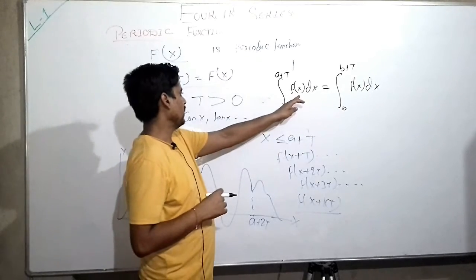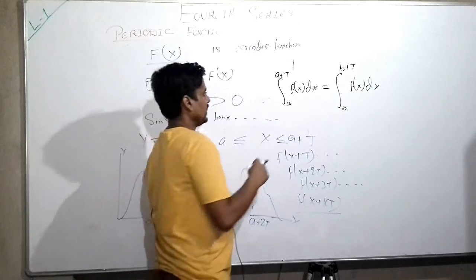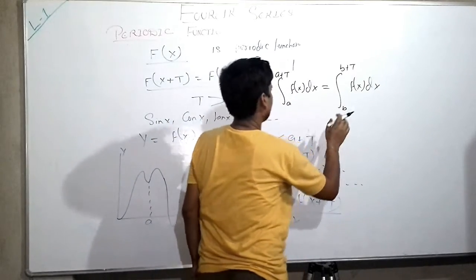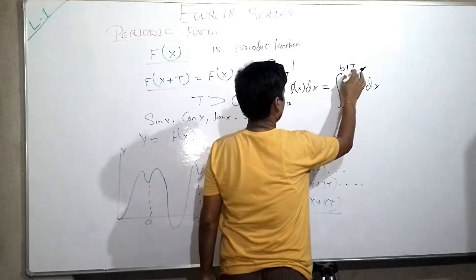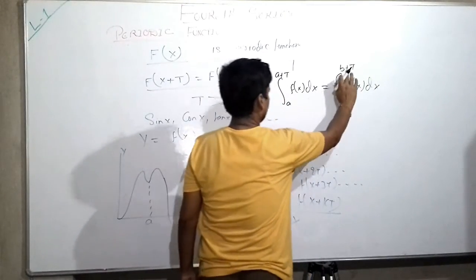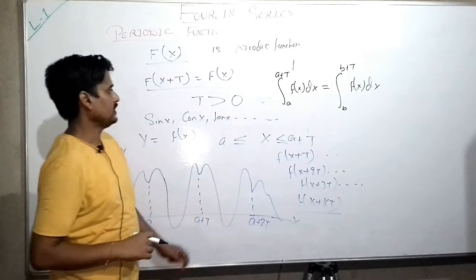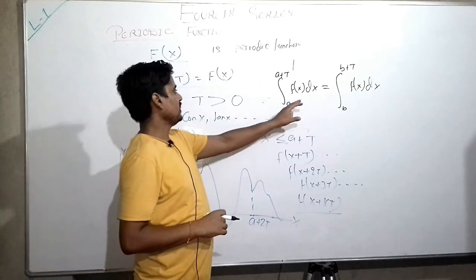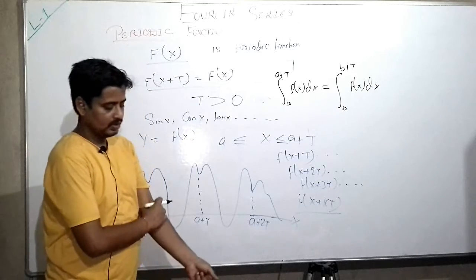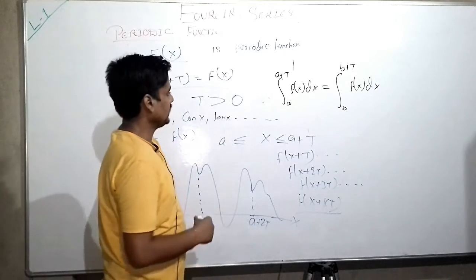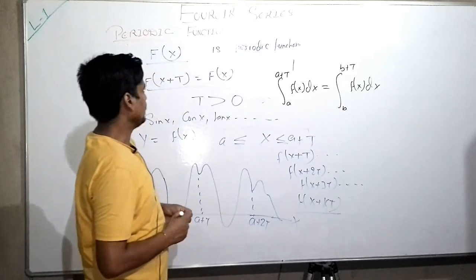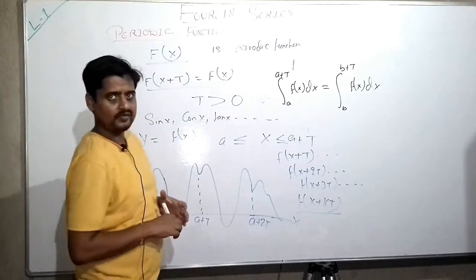So it means if function f(x) is integrable from a to a + T, then it can also be integrable from b to b + T, and it will have the same value. So this is the definition of periodic function.